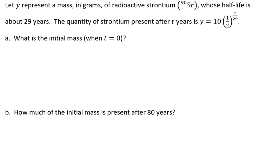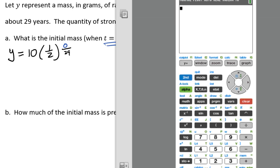We want to know first, what is the initial mass when t equals 0? We're going to plug a 0 in for our t. We're going to use our calculator to help us out with this. So we'll have y equals 10 times one-half to the 0 divided by 29, because it told us t equals 0. Let's pull up your calculators. We're going to plug in 10 times one-half.